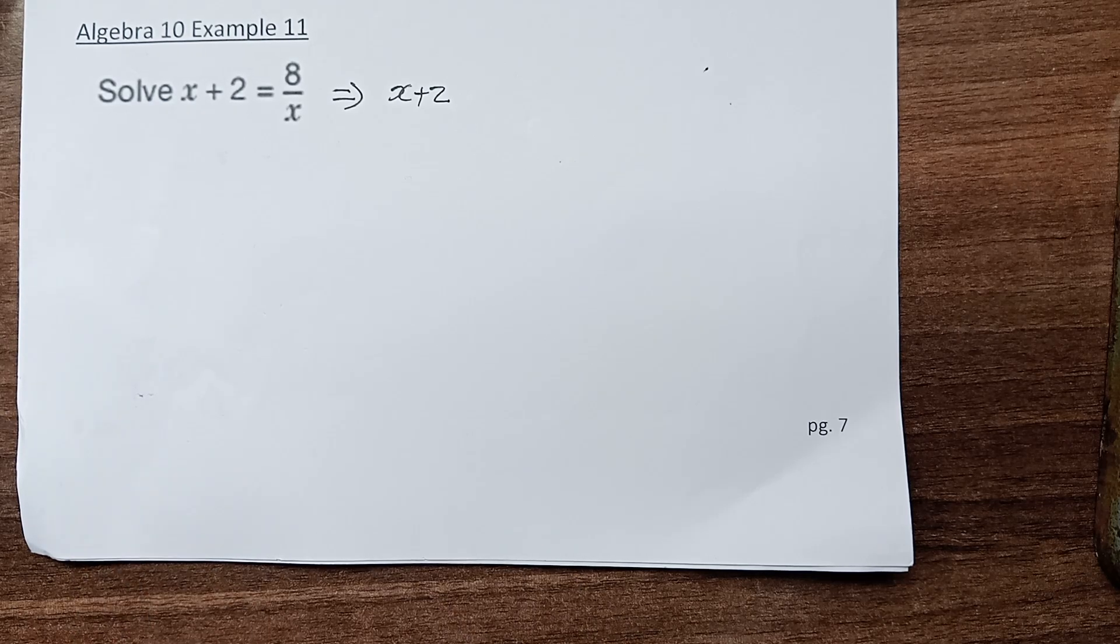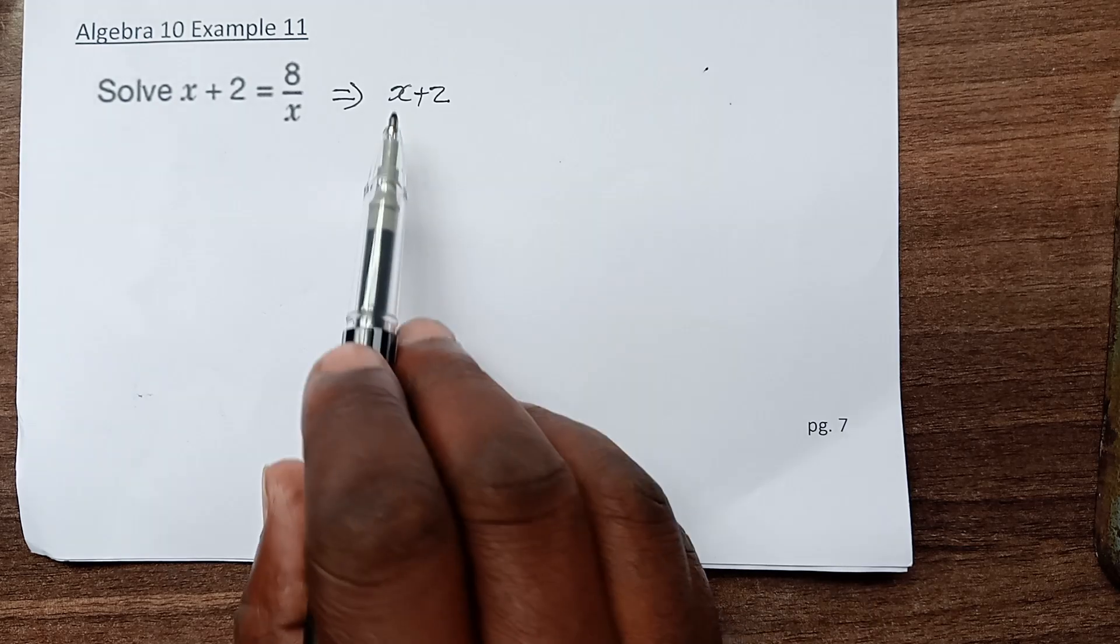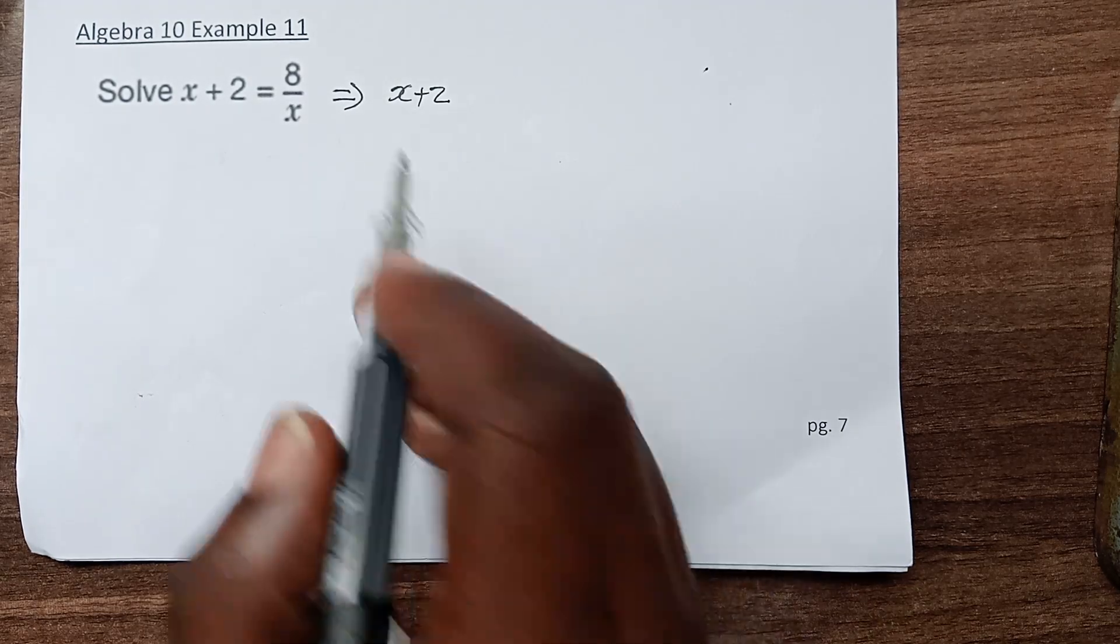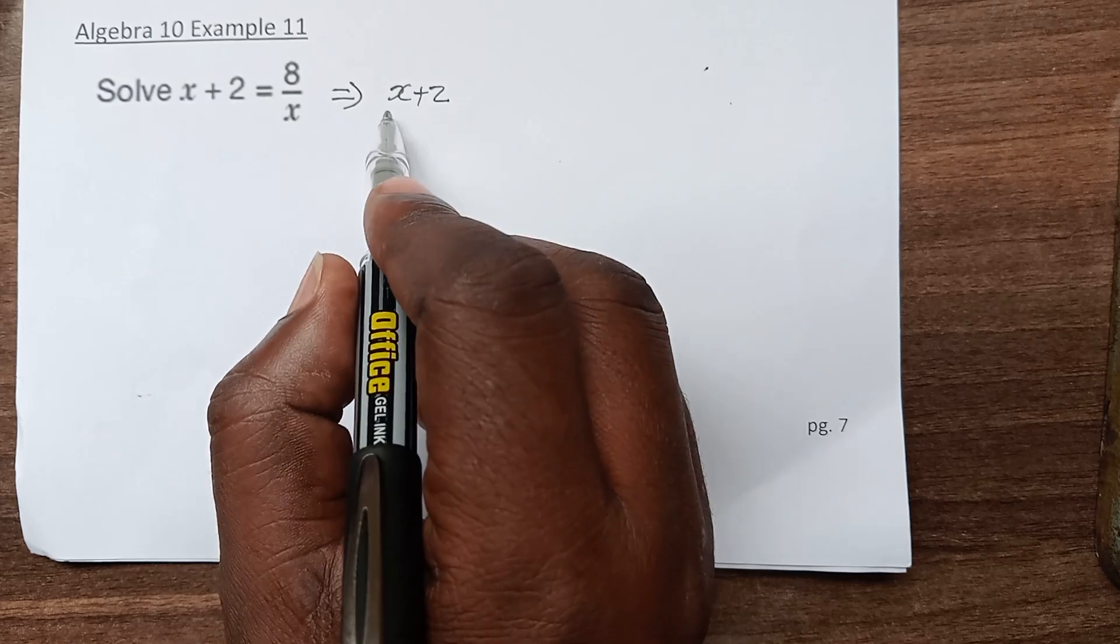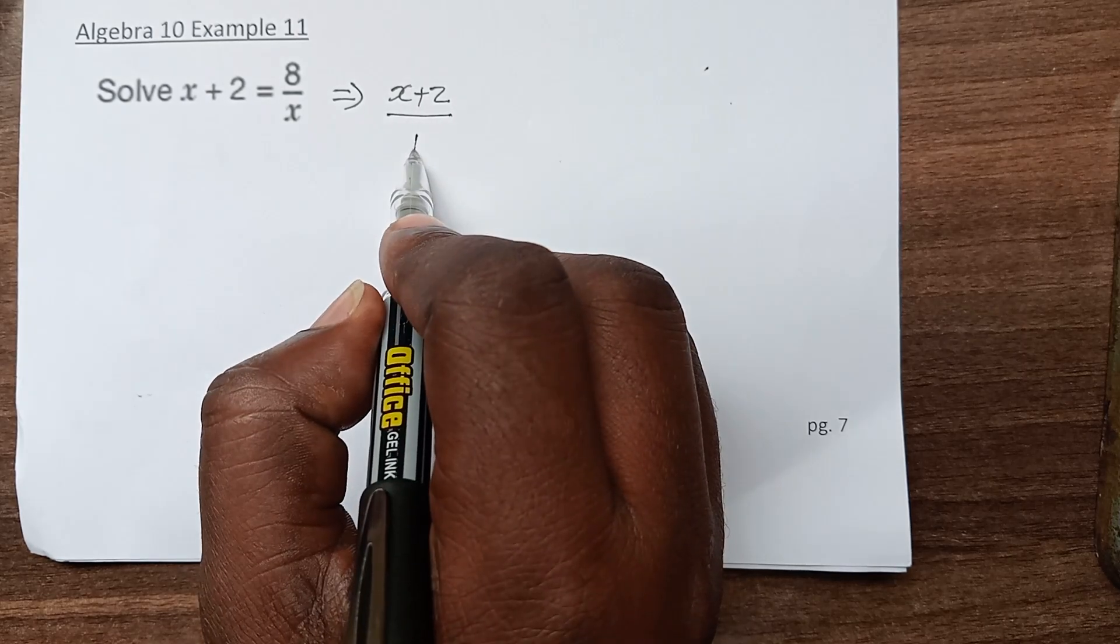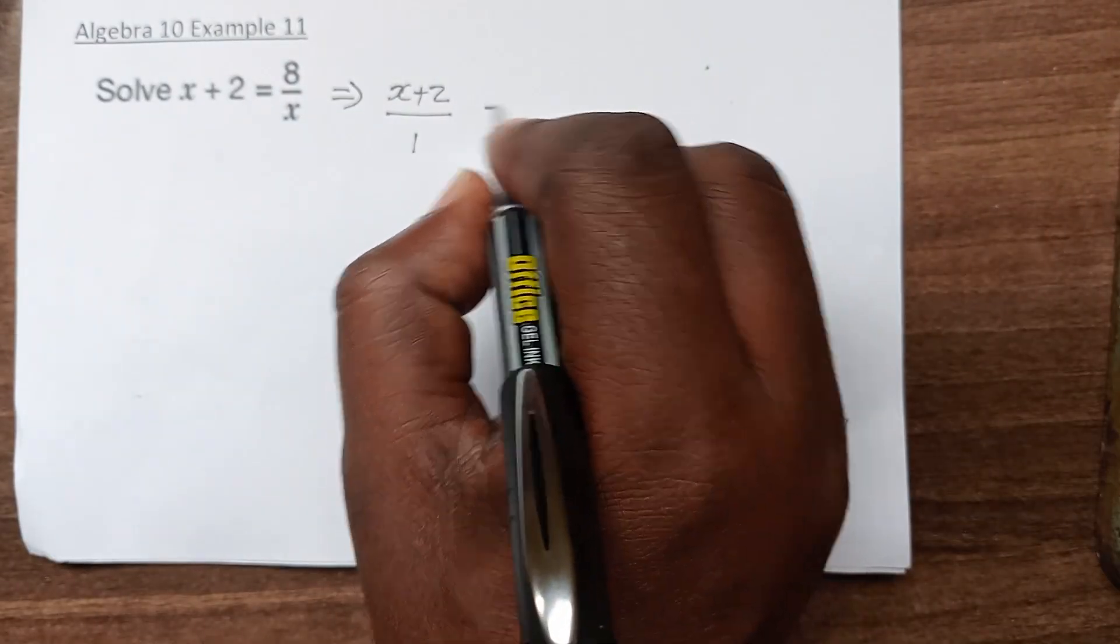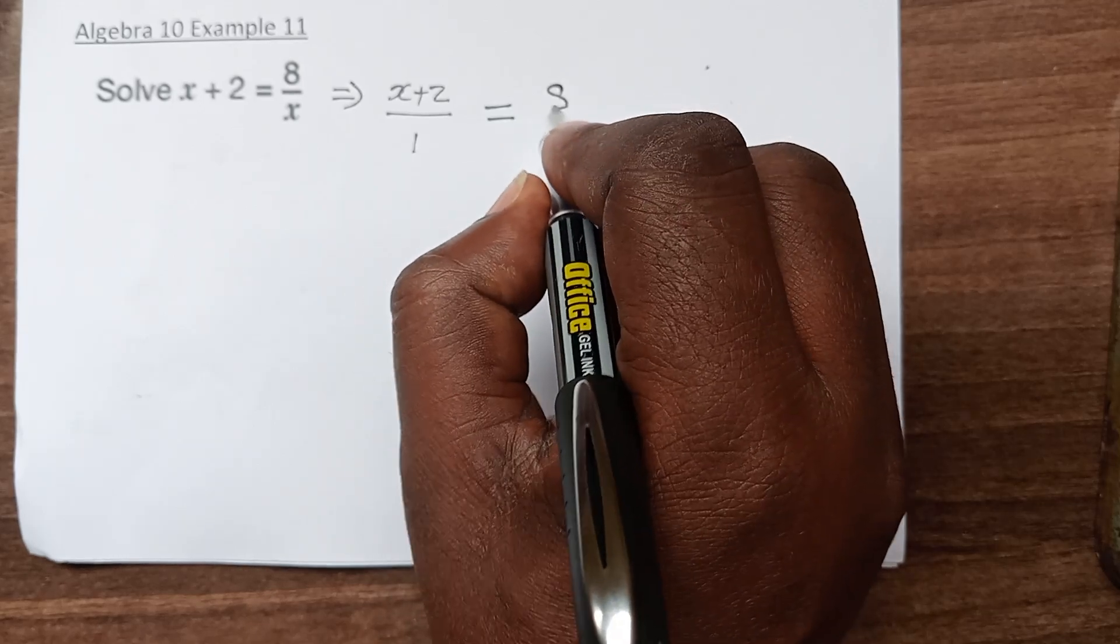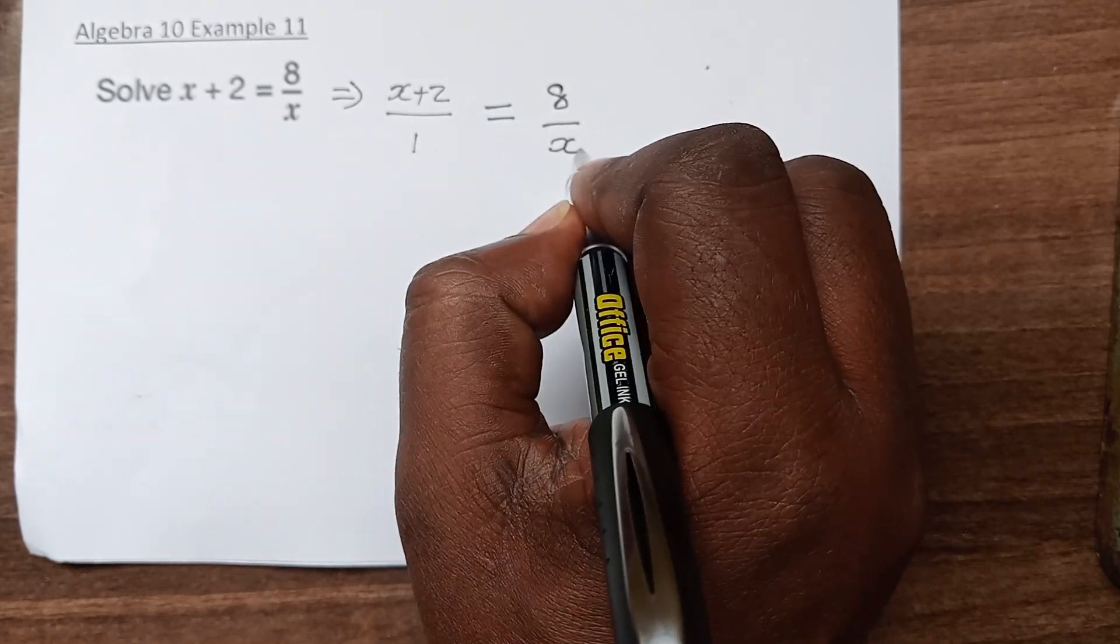We want to treat this as two equal fractions. On the left-hand side, we have x plus 2, which is naturally over 1, and this equals 8 over x.